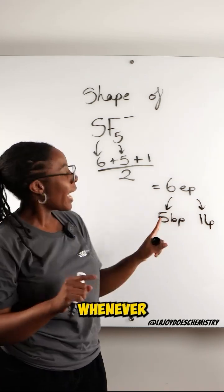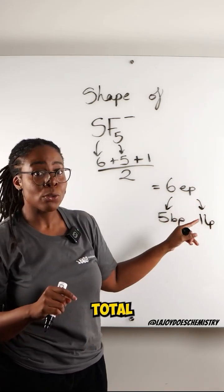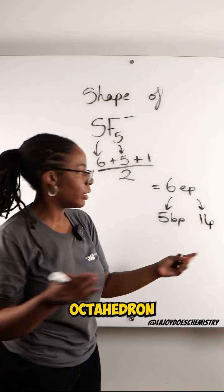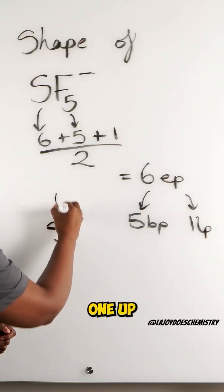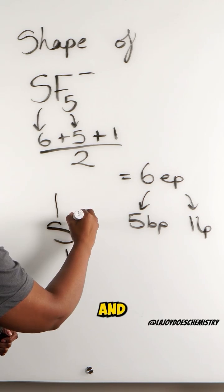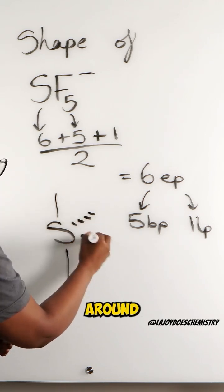So now what's the shape? Whenever we're dealing with six electron pairs total we're thinking of our octahedron so octahedron shape. So our sulfur in the middle one up one down and then four around the middle.